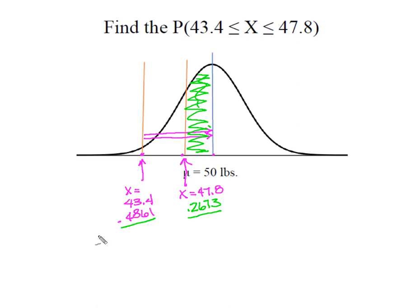When you're solving for an area between two values on the curve and they fall on the same side, we use this mnemonic to say same side subtract. I'm going to take the 0.4861, subtract out the 0.2673 that is counted twice and I'm going to end up with 0.2188. And so now I know that this area right here between these two values of X is 0.2188. The probability of a bulldog weighing between 43.4 and 47.8 pounds is 21.88%. So remember, when X's are on opposite sides of the mean, we add those two areas together. When the X's are on the same side of the mean, we're going to subtract.